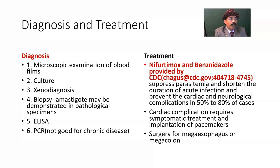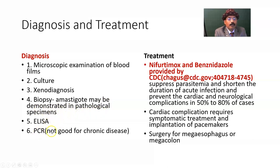In xenodiagnosis, the uninfected vector is allowed to take blood from the suspected patient, then the vector is given time to allow the parasite to multiply in the reduviid bug, and then the bug is sacrificed to find out if it is infected with the Chagas protozoa. This is a lengthy process but has authenticity. Biopsy — amastigotes may be demonstrated in pathological specimens. ELISA — enzyme-linked immunosorbent assay. PCR is not very good for chronic disease. Diagnosis should use all of these methods together if possible.